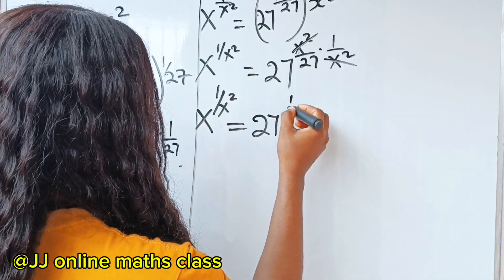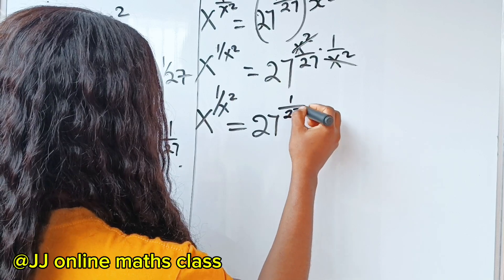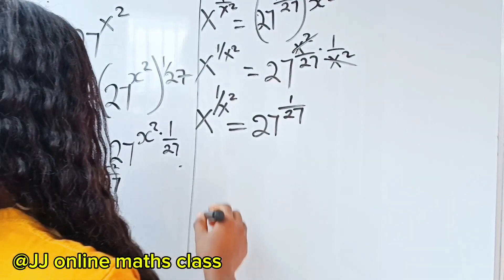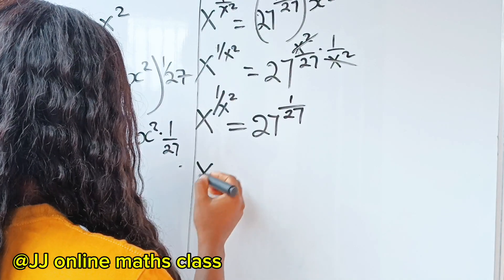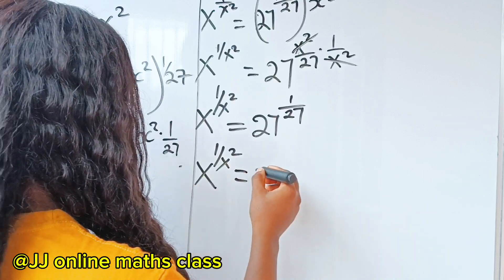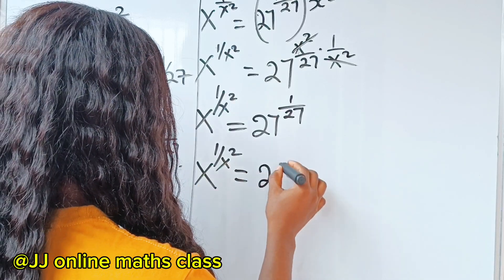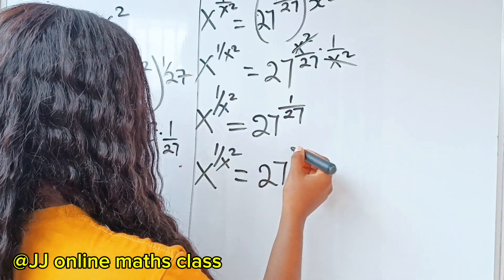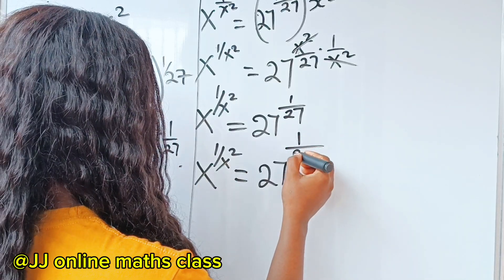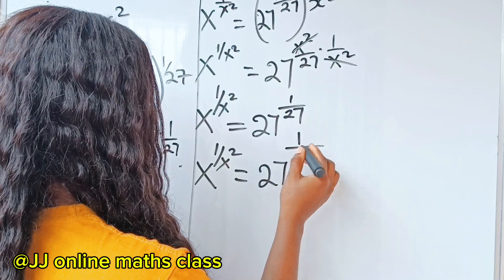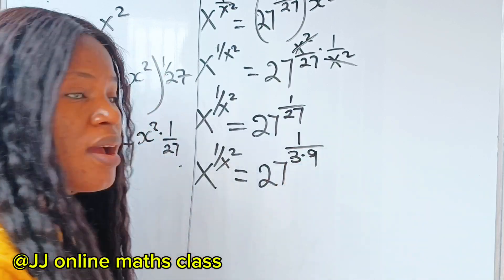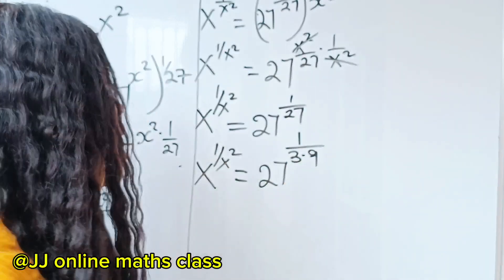Now we have 1 over 27. So x to the power of 1 over x squared is equal to 27 to the power of 1 over 9 multiplied by 3, or 3 multiplied by 9.